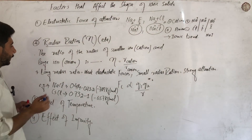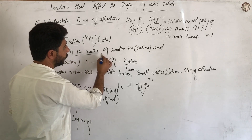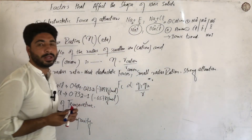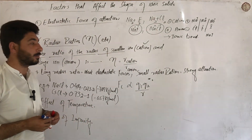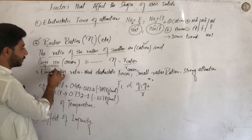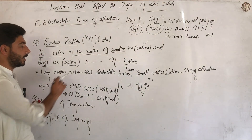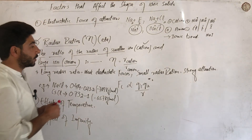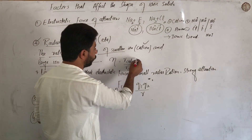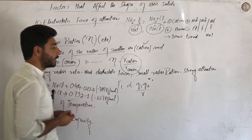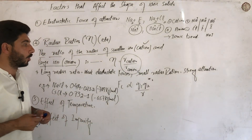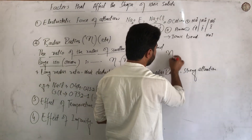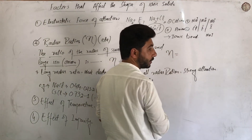The radius ratio is the ratio of the radius of the smaller ion - the smaller ion is the same as the cation, so if the cation size is smaller - to the larger ion, which is the anion. So radius ratio equals cation radius divided by anion radius.